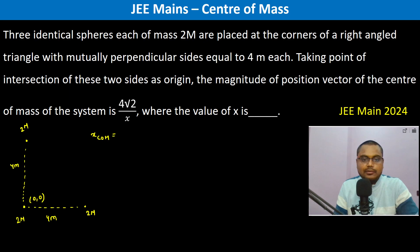Xcum which is equal to sigma mi xi divided by sigma mi. So, 2m into 4 divided by 6m. Because these coordinates should be (4,0) and (0,0) and (0,4). So this is 8 by 6 which is 4 by 3.